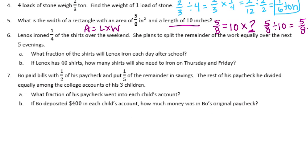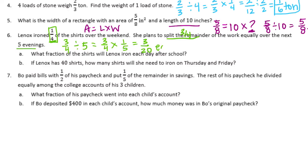Number six. Lennox ironed a fourth of the shirts over the weekend. She plans to split the remainder of the work equally over the next five evenings. What fraction of the shirts will Lennox iron each day after school? If she ironed one-fourth, the remainder of the work would be three-fourths. She's going to split that between five evenings, so three-fourths divided by five, or three-fourths times one-fifth, would be equal to three-twentieths. So she's going to iron three-twentieths each day.